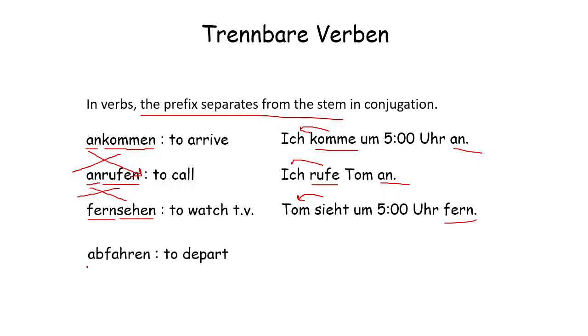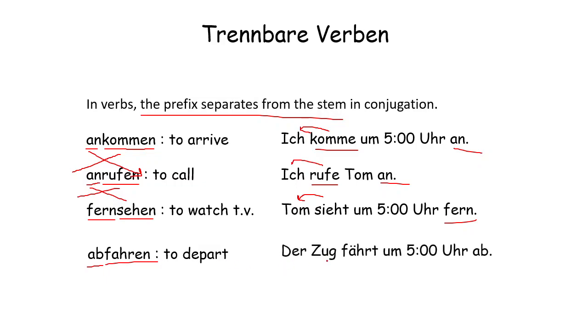Abfahren means 'to depart'. For example: 'Der Zug fährt um fünf Uhr ab' — The train departs at five o'clock. 'Fahren' conjugates with 'Zug' and 'ab' goes at the end of the sentence.